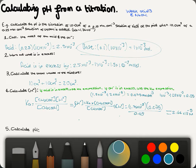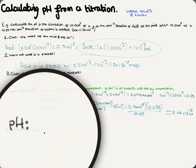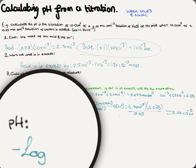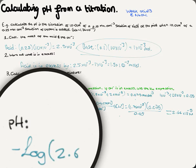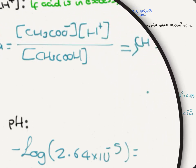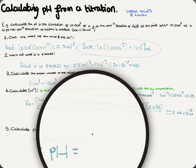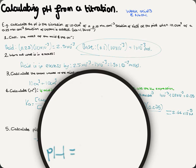For the final step, we calculate pH using our H⁺ concentration. pH = −log(2.64 × 10⁻⁵). Putting this into the calculator gives a pH of 4.58 to 2 decimal places.